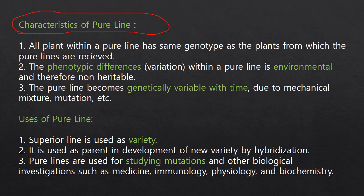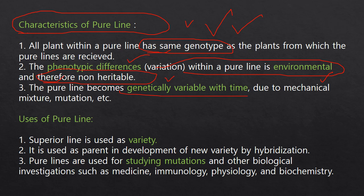The most important characteristic of pure line selection is that all plants have the same genotype. The phenotypic differences within a pure line are only environmentally related and therefore non-heritable. The variation always depends upon the environment, not the genotype of the individual. A third characteristic is that the parents become genetically variable with time due to mechanical mixture, mutation, etc.